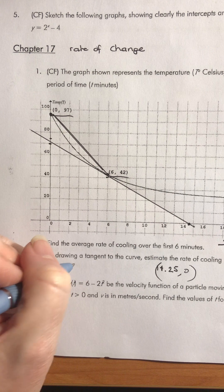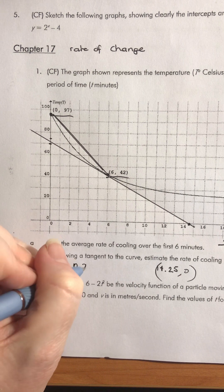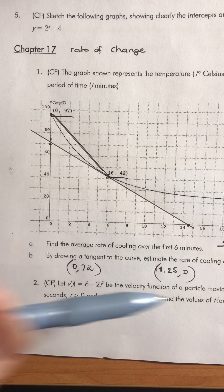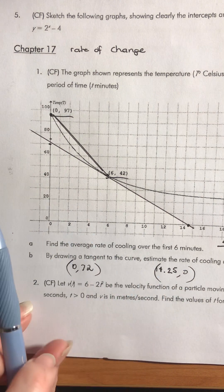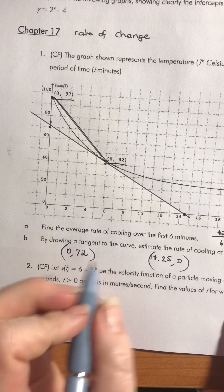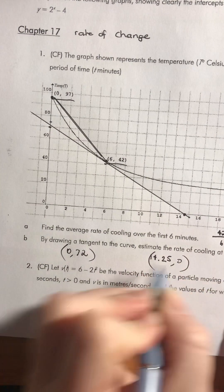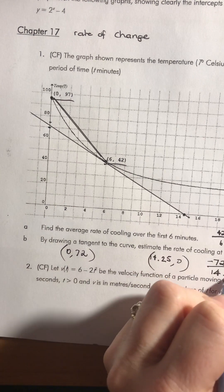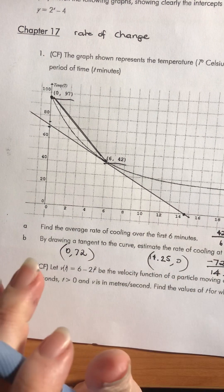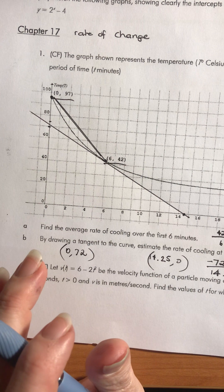So I've got my x is zero and my y is 72. So then, looking at the gradient between those two points, I've got on the top zero take 72, so I get negative 72 over 14.25 take zero, which is just 14.25. So then I can pop that in my calculator: negative 72 divided by 14.25.